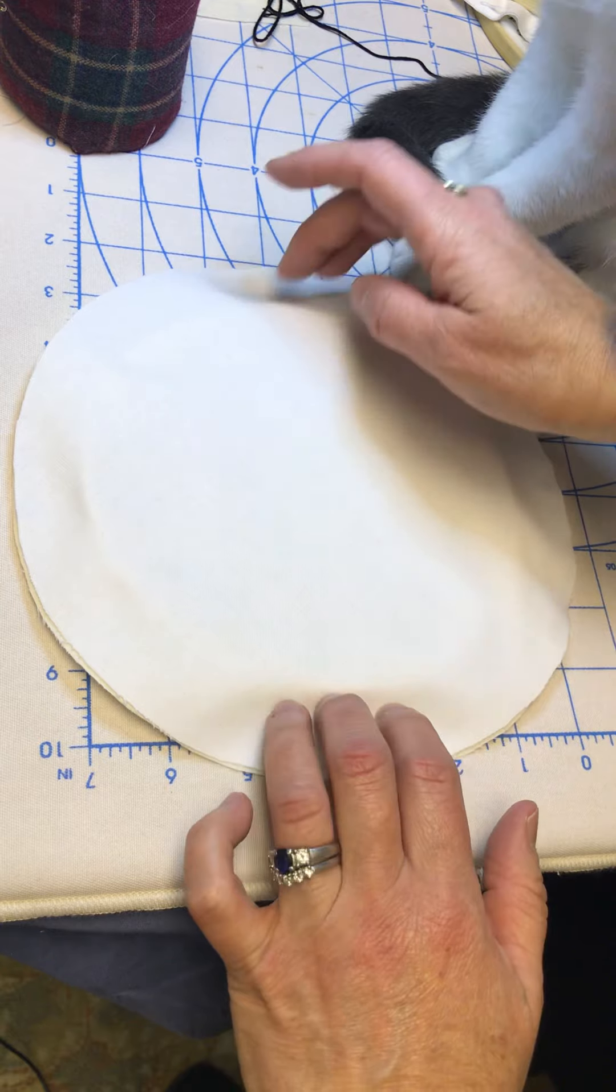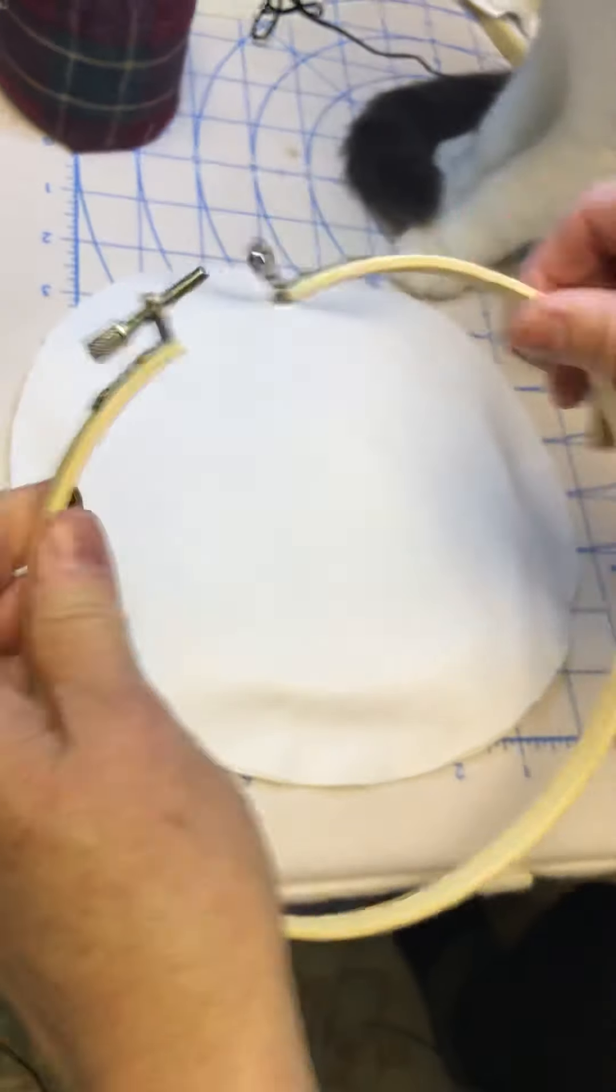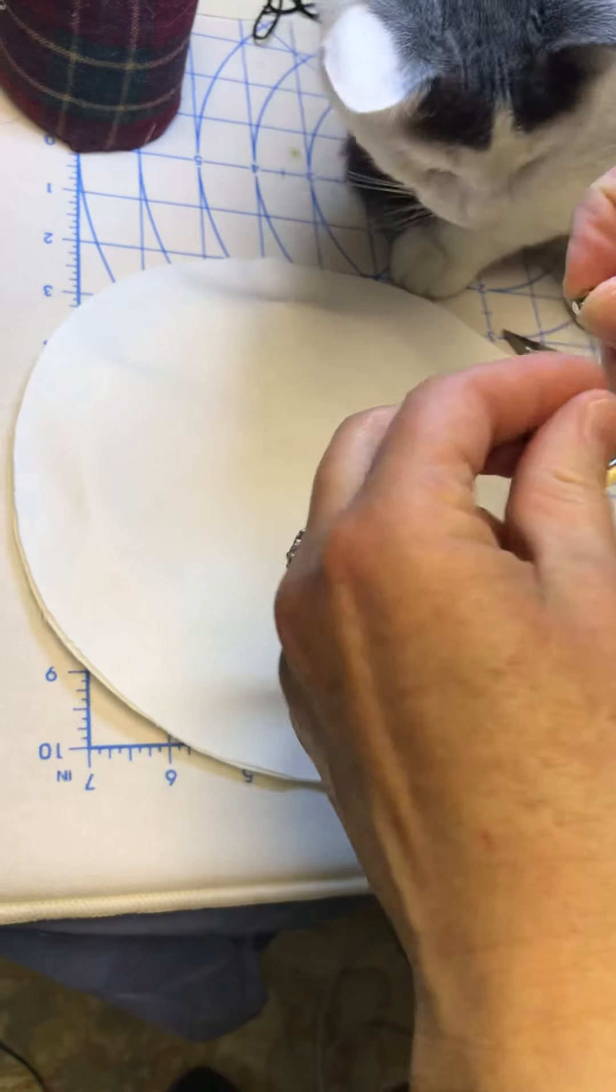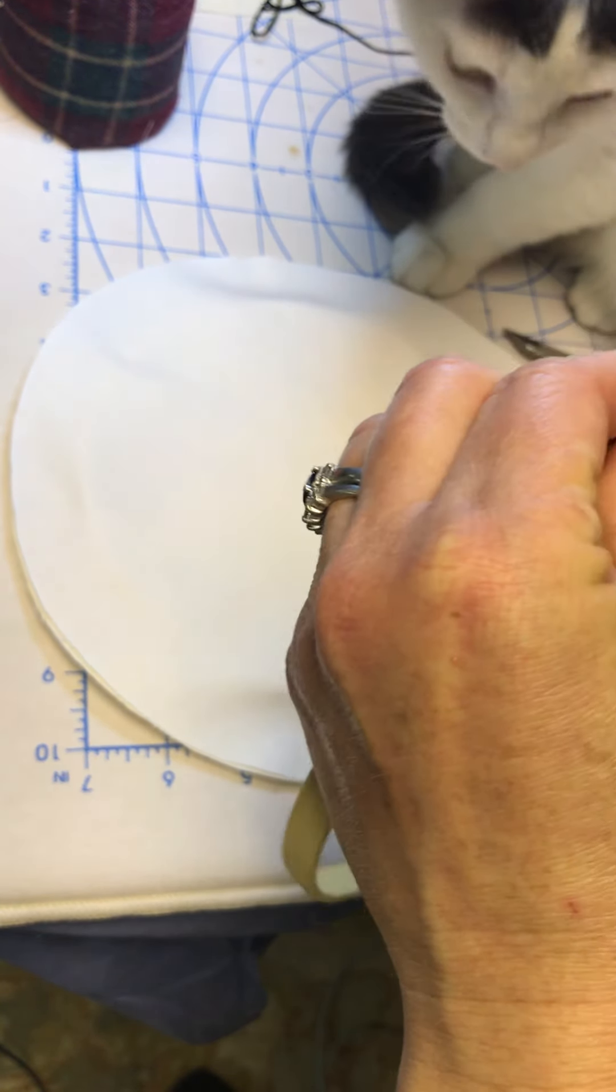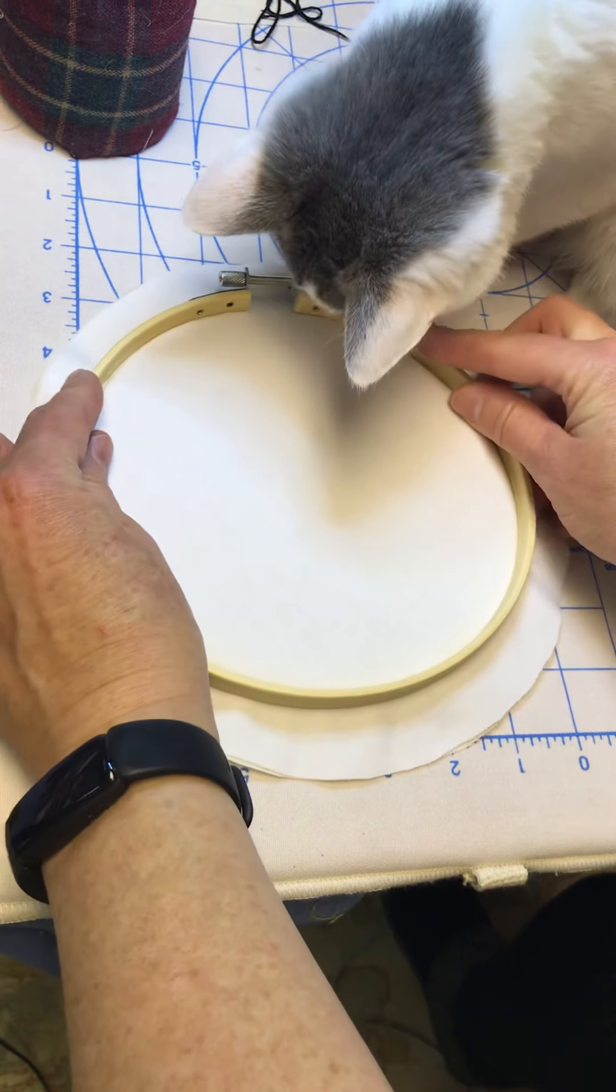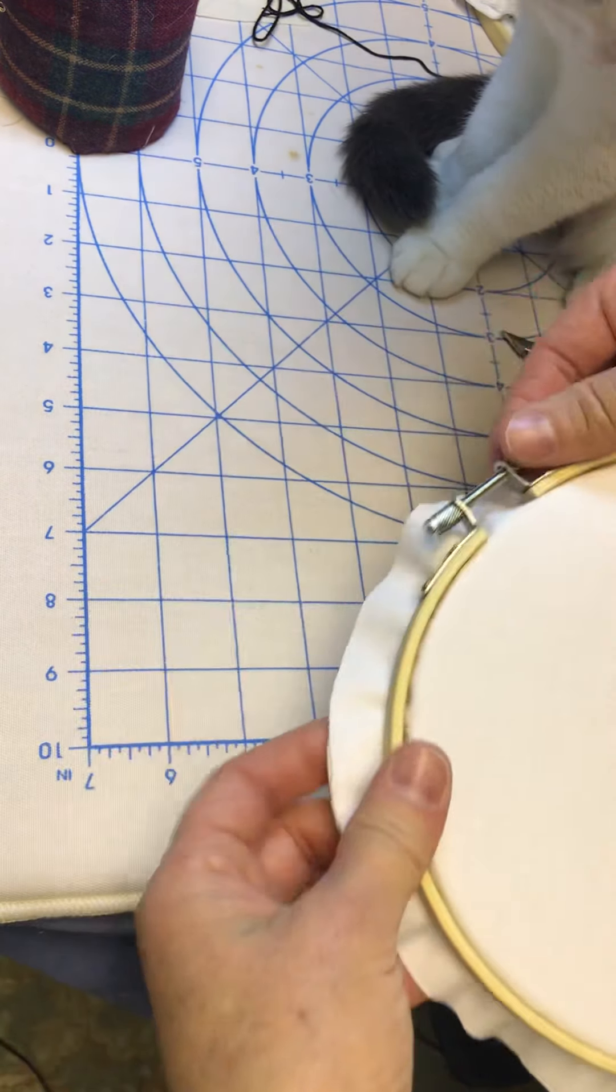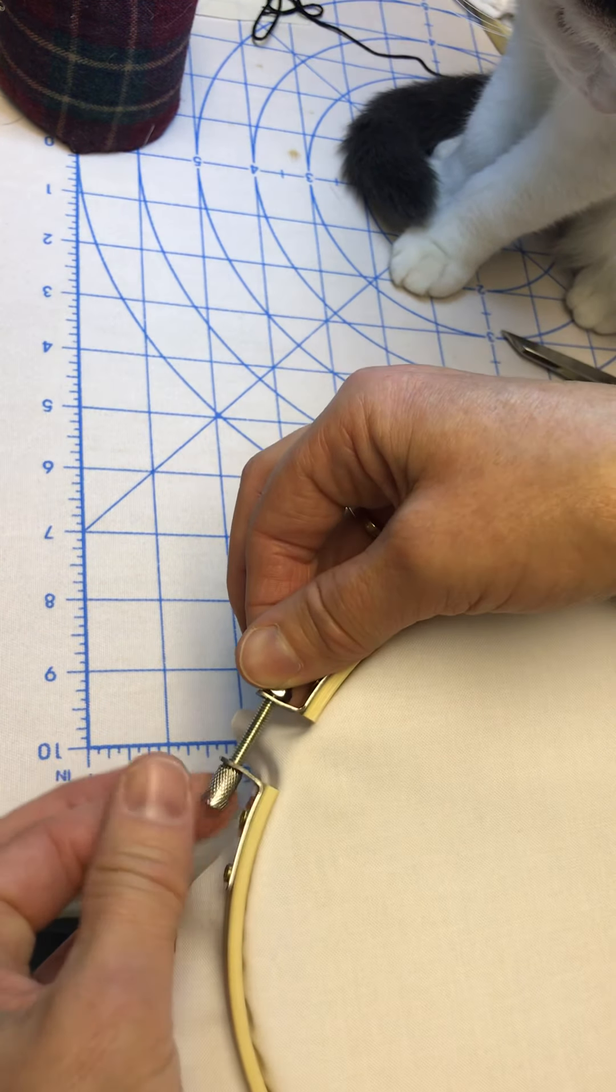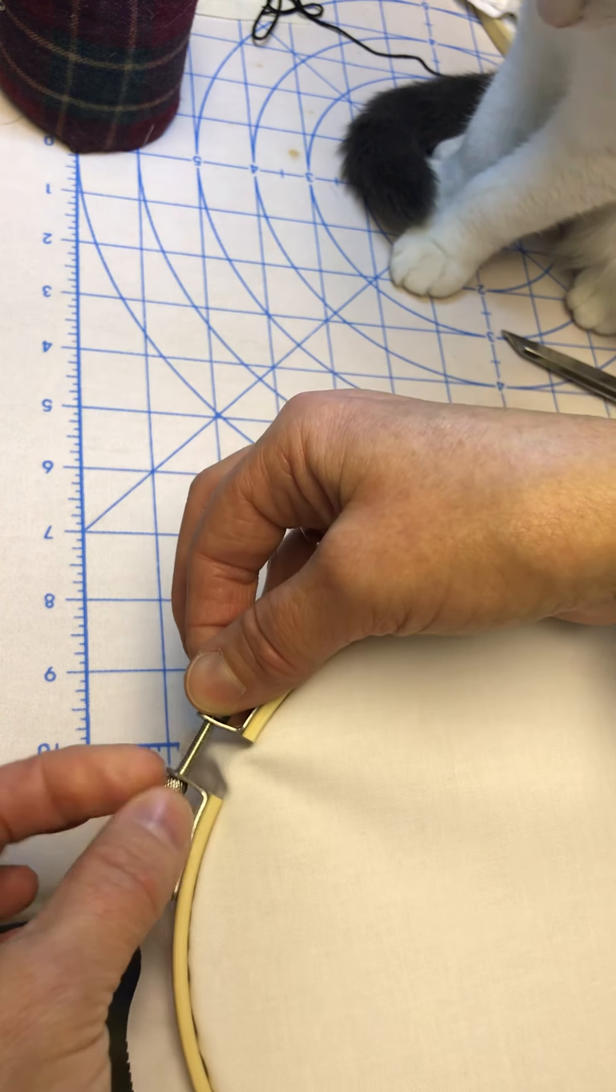I just want to check and make sure you're centered. And I like to open these hoops as wide as they'll go. Oops, didn't mean to take the screw off though, the nut. So that way it just slides nicely right over the fabric.